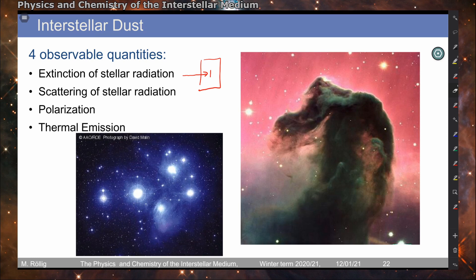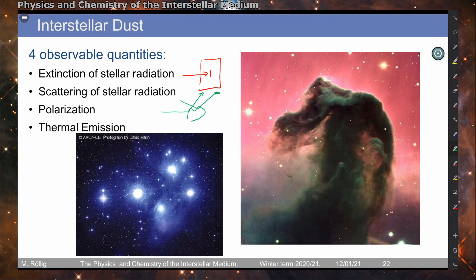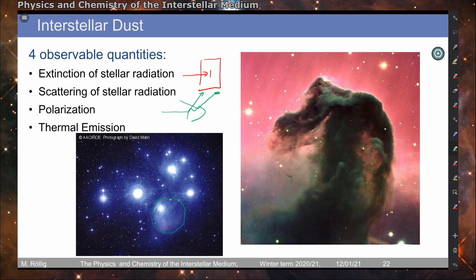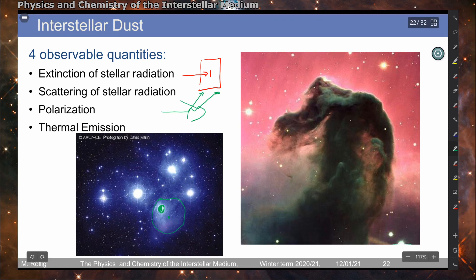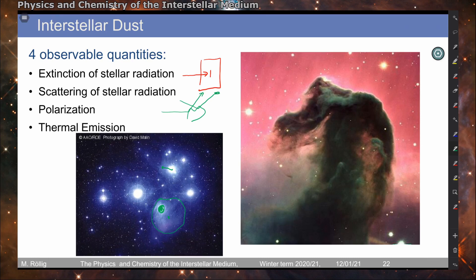We also observe scattering of stellar radiation, which is basically scattering of light off dust particles. This is observed in the Pleiades, where the blue-shaded region around the stars shows light with the same spectral shape as the stars themselves. This has been interpreted as radiation emitted by the stars hitting dust particles and then being reflected and scattered in the direction of our detector. So this is scattering.